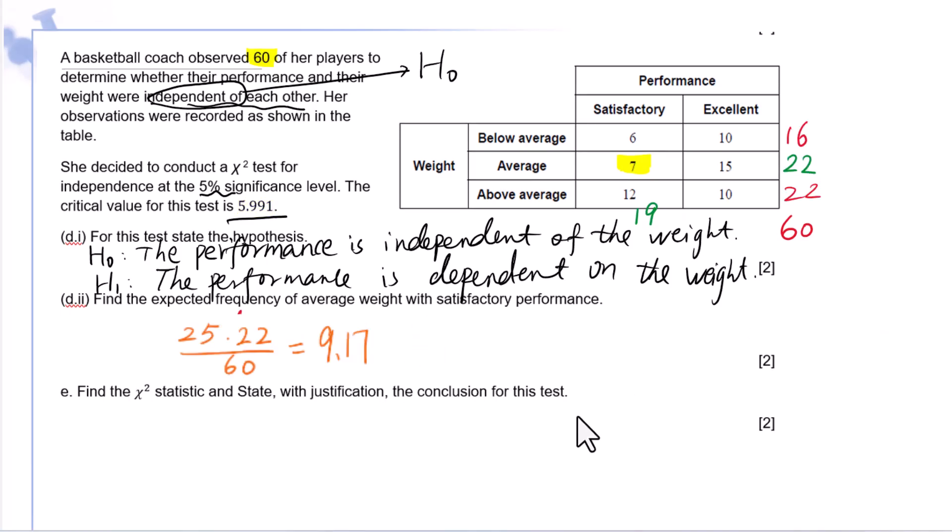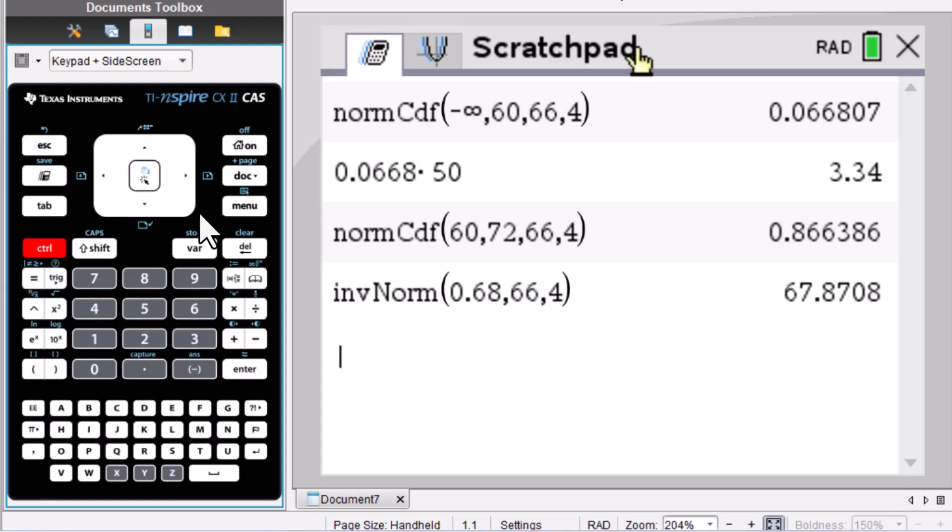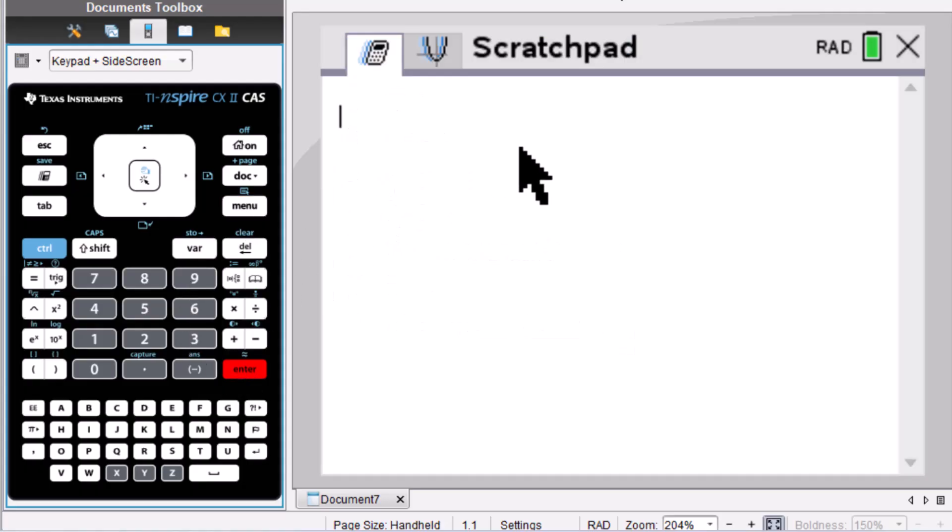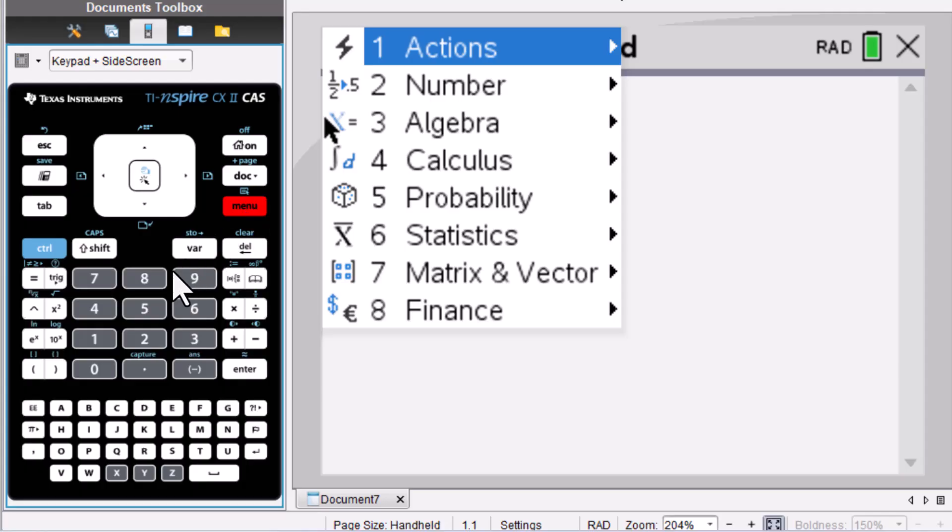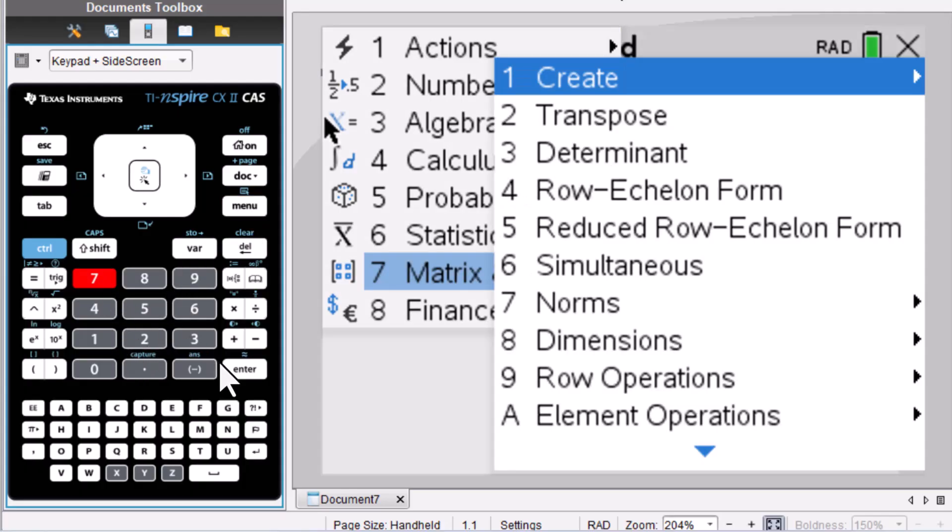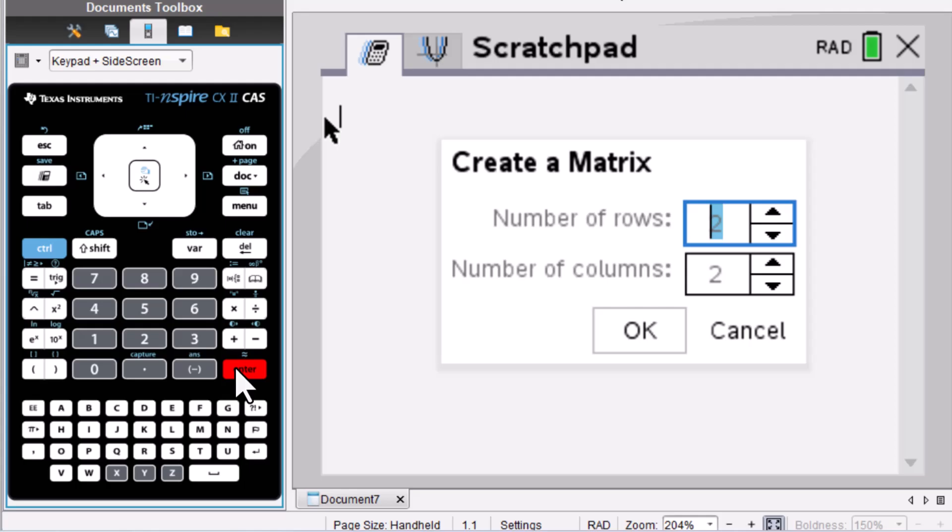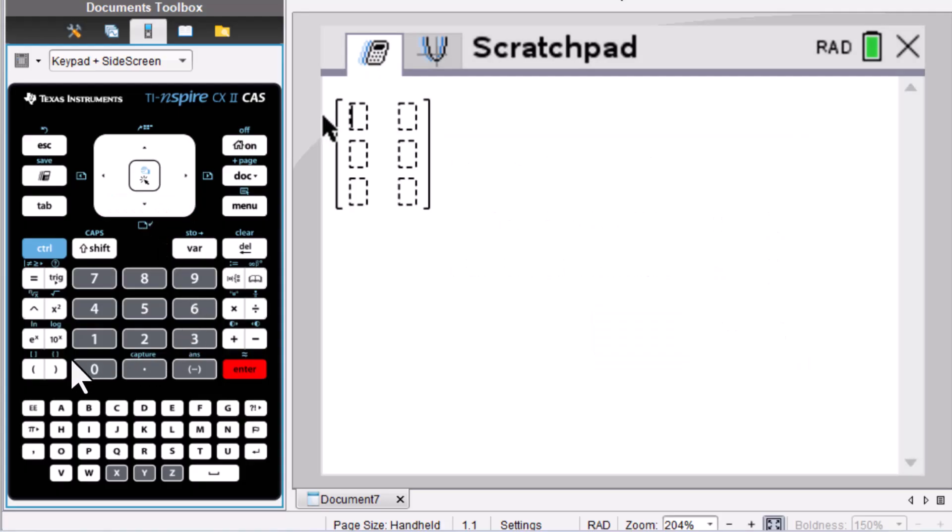E. Find the chi-squared statistic and state with justification the conclusion for this test. We need a matrix, so clear this scratch pad. Menu 7, enter, enter. We need 3 rows, 2 columns. Double click this right arrow button, then go down. Right arrow button again, go down, enter. Put in the data.